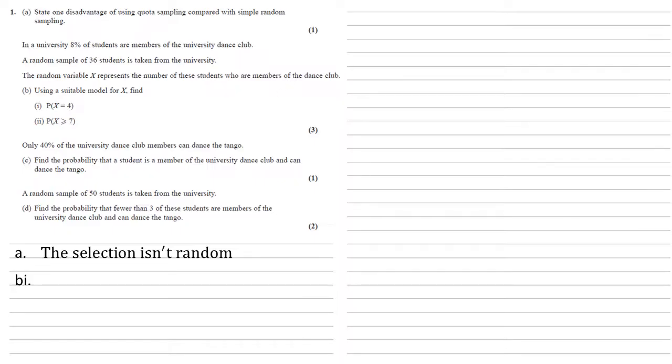So question B, using a suitable model for X, we first need to find the probability that X equals 4. So the first thing to do here is state what model we're using. So this is to do with percentage, so it's a probability of 8%. So we're going to model it as the binomial with a total number of 36 and a probability of 0.08. That's our 8%. We then need to find the probability that X equals 4.